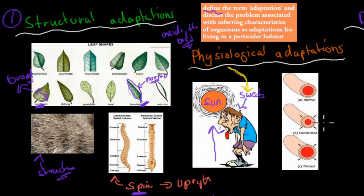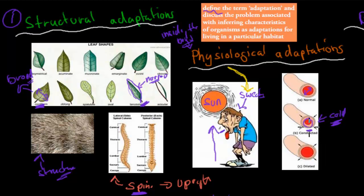Another physiological example is blood vessel constriction and dilation. When it's cold, blood vessels constrict — reducing blood flow to the face and arms — so less heat is lost, keeping warmth near your organs. When it's warm, blood vessels dilate, meaning more blood reaches the face and arms and more heat is released. These are two internal responses the body makes to regulate temperature.